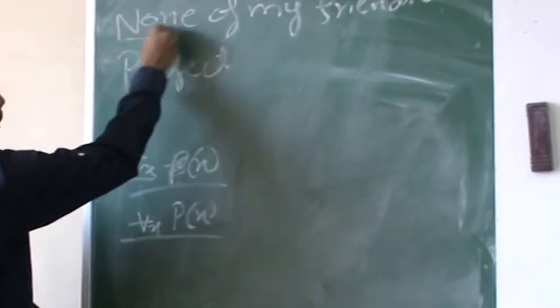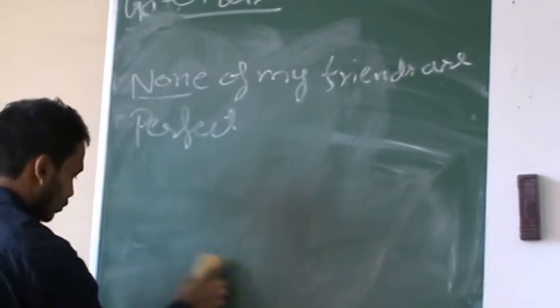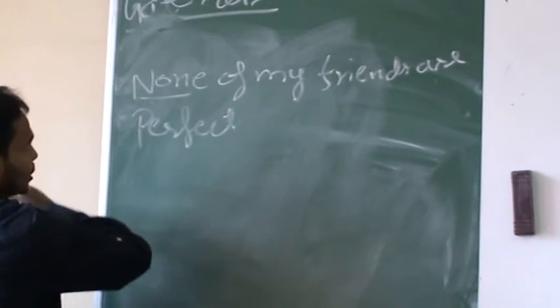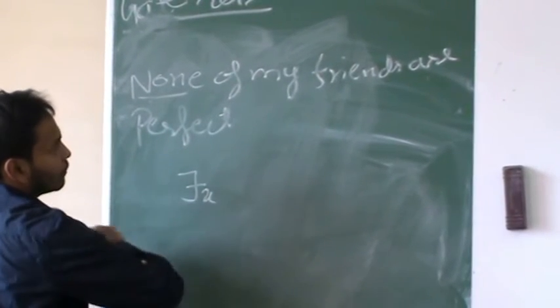So here what we are trying to say is none of my friends are perfect. We can do this by both approaches. But here I am using the existential quantifier for us. None of my friends are perfect.